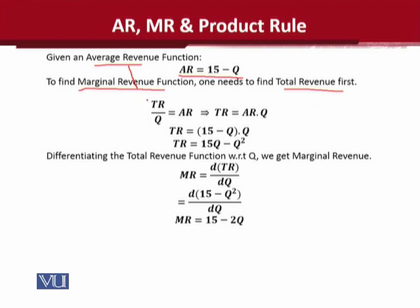The formula understood by all students of economics is that average revenue is basically the average of the total revenue with respect to output. If we cross multiply it, the total revenue value can be extracted. The total revenue value is AR into Q — simple by cross multiplication.